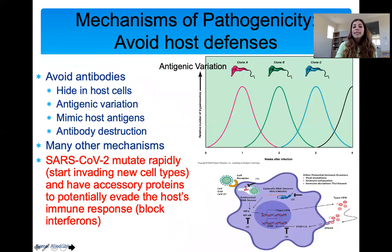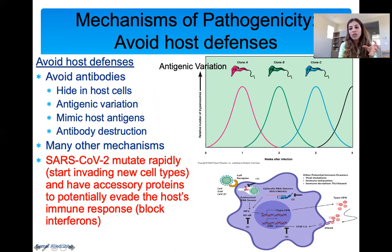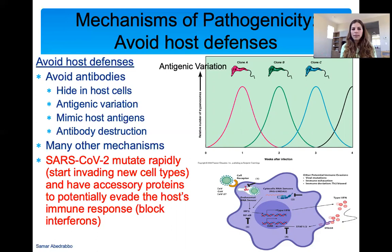Some pathogens avoid antibodies by hiding in your cells or by changing their antigens. Remember, antibodies are specific to the antigen — so if your body forms an antibody for one antigen and then it changes or mutates, your body cannot fight it off anymore. This is our problem with viruses, which mutate a lot in general. Pathogens can also mimic host antigens so the body doesn't form antibodies against them, or they can destroy antibodies. There are many mechanisms for how different microbes avoid host defenses.